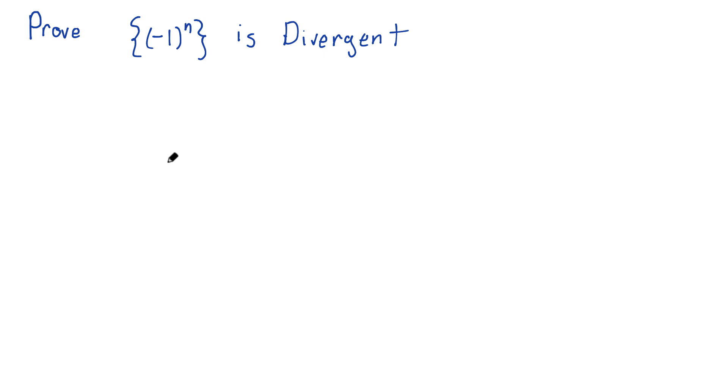Intuitively, you probably know this. The sequence negative 1 to the n starts out at negative 1, then it goes to positive 1, then negative 1 and positive 1 again. It's just going to oscillate. It's just going to bounce back and forth between 1 and negative 1 forever.